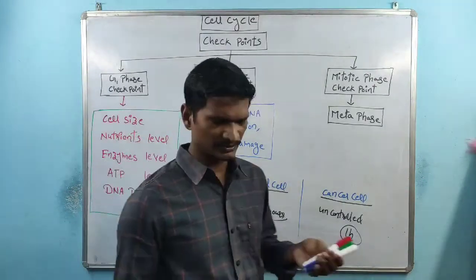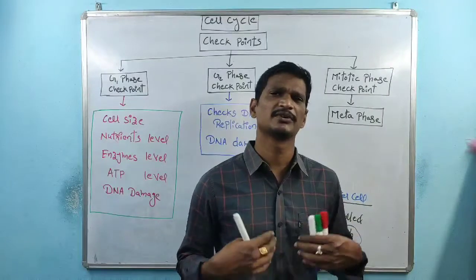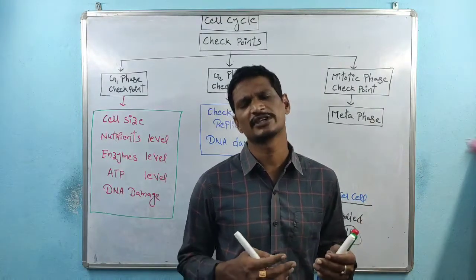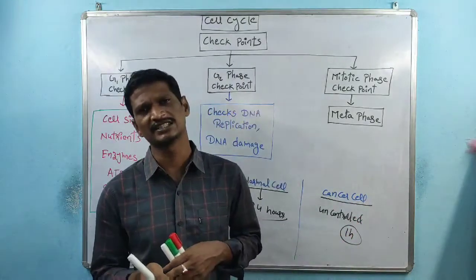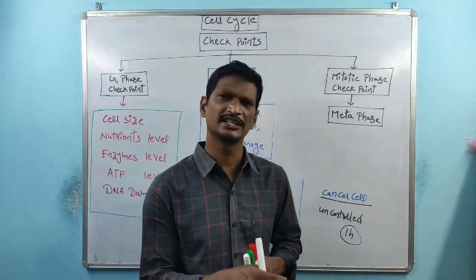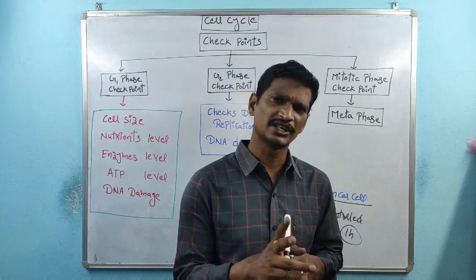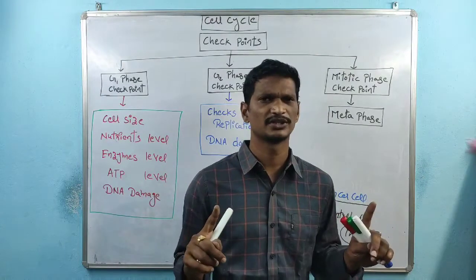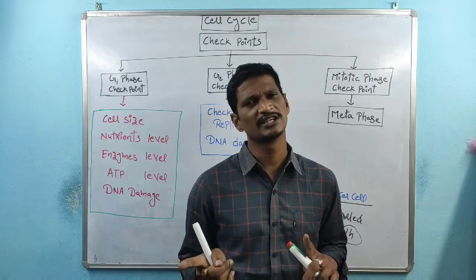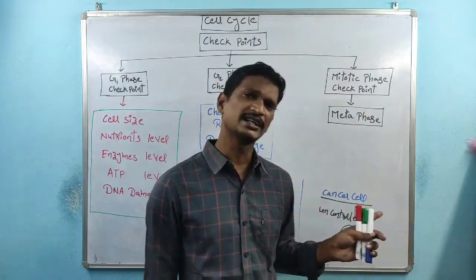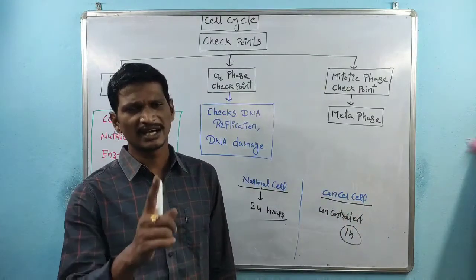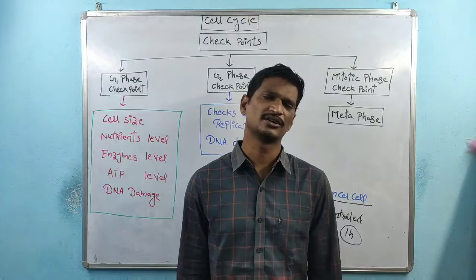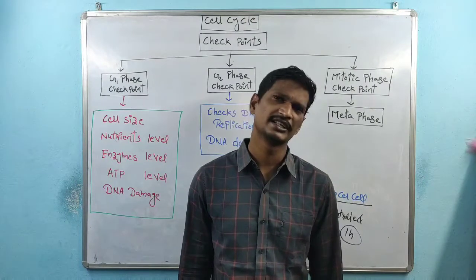In normal cells within our body, cell division completion requires 24 hours. But in cancer cells, cell division completion requires only one hour. So the key difference is: one is controlled cell division, the other is uncontrolled cell division. Uncontrolled cell division is called cancer.